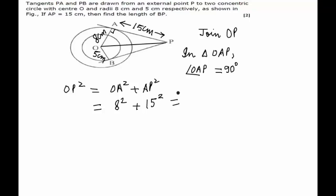This comes out to be equal to 289 which is 17 square. So on comparing the left hand side and the right hand side we get that OP is equal to 17 cm.